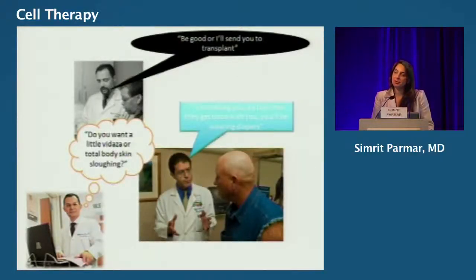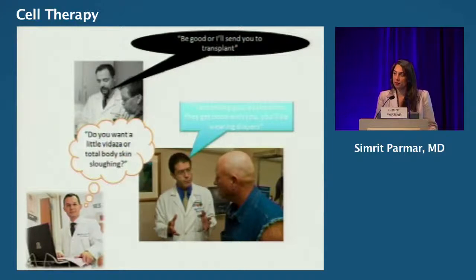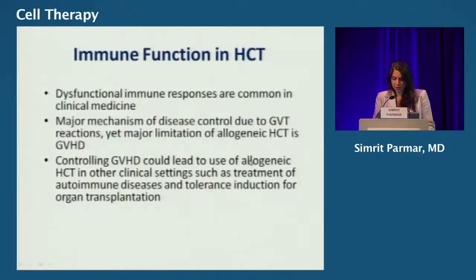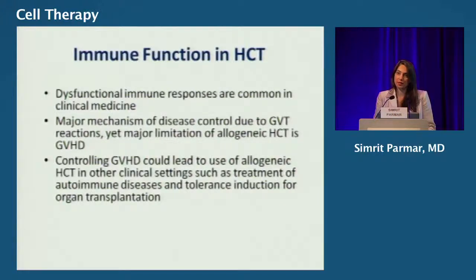As transplanters, we gain the reputation that even though we are able to cure a certain subset of patients, the poor quality of life due to graft-versus-host disease is very infamous with other departments. There is really no free lunch — as we decrease the risk of graft-versus-host, there is risk of increased relapse. Let's take a step back and see what role immune function plays in transplant outcomes and how it leads to development of GVHD.